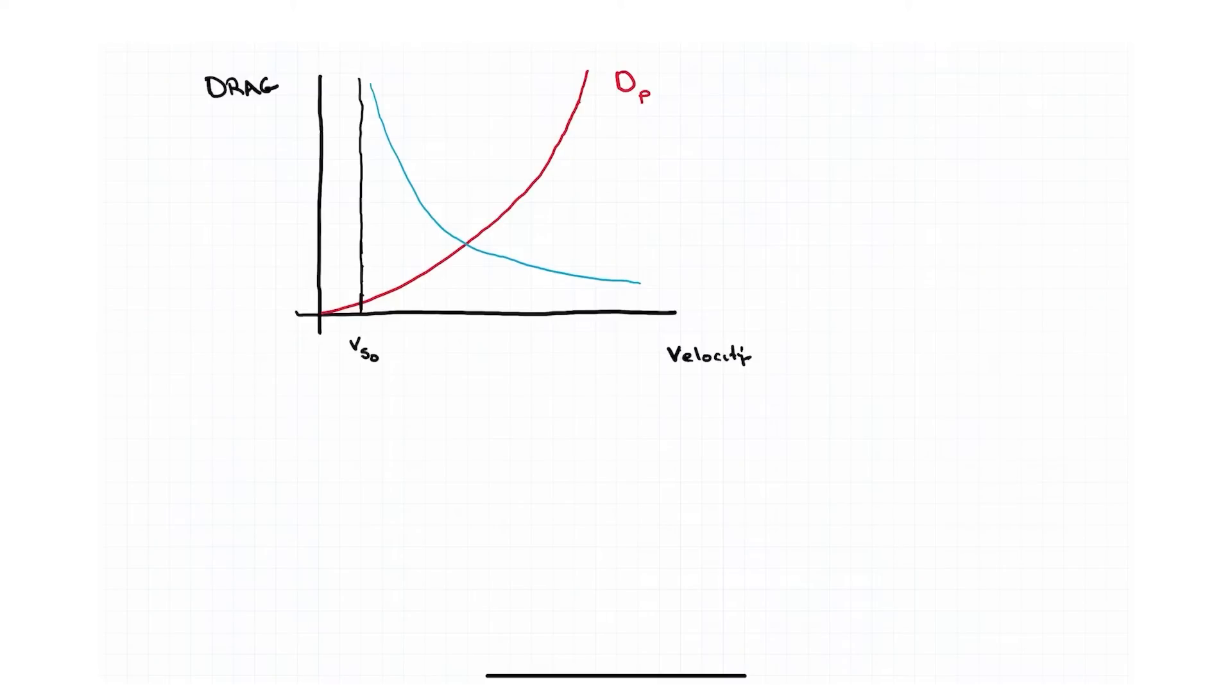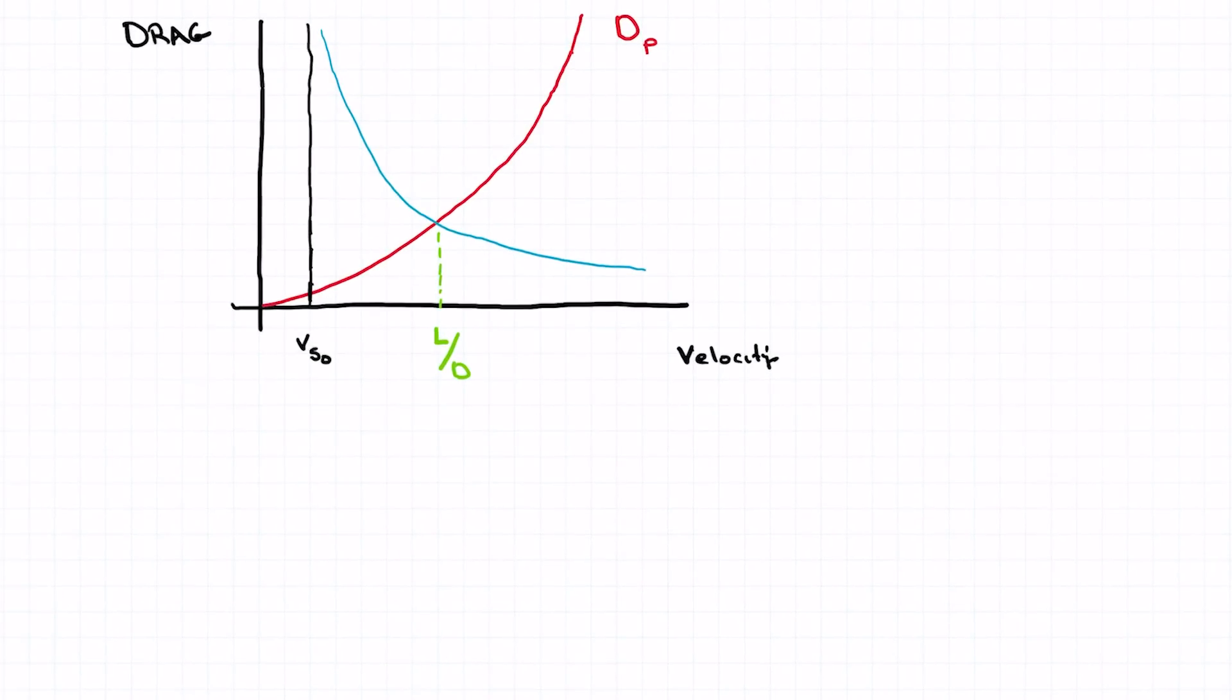The faster I go, the less the induced drag, because the angle of attack is lowering. The faster I go, lower angle of attack, less induced drag. Okay, the point where these cross is a kind of a special place. That would be your best lift to drag ratio. So the least drag would be right here. The least amount of drag that you could have.